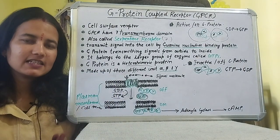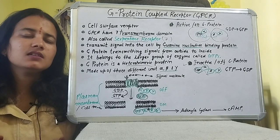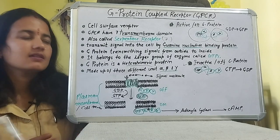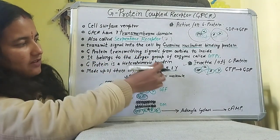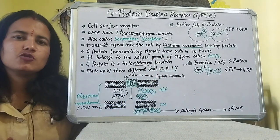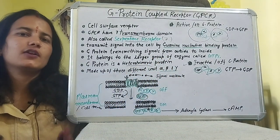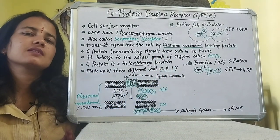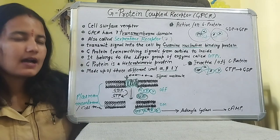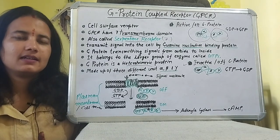G-protein is a heterotrimeric protein, meaning it has three different subunits: alpha, beta, and gamma, which are all different from one another. This is why we call it heterotrimeric.